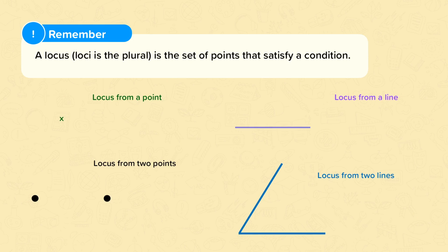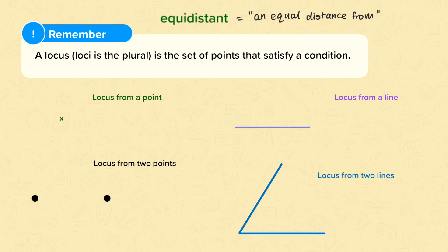You may be asked to give a locus from a given point. You may also be asked to give the locus of points from a line, the locus from two points, or the locus from two lines. You'll also need to recognise the word equidistant, which means an equal distance from.